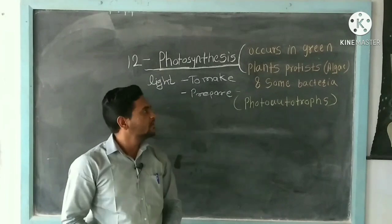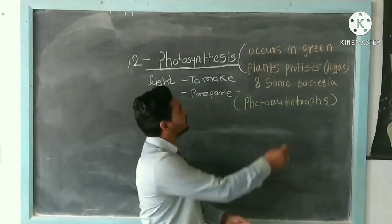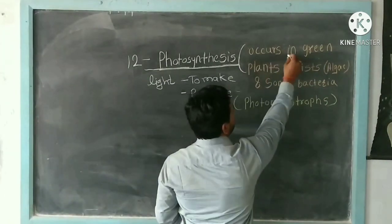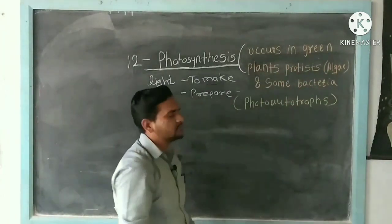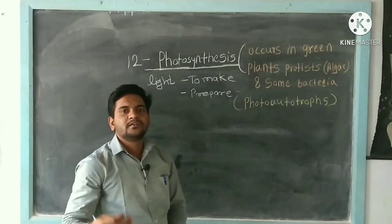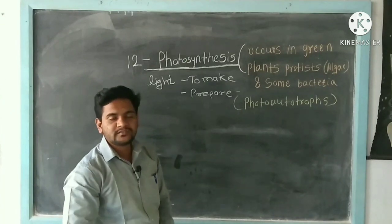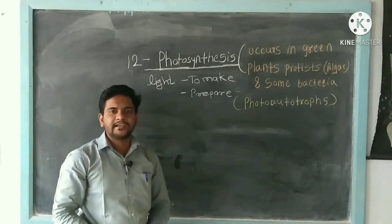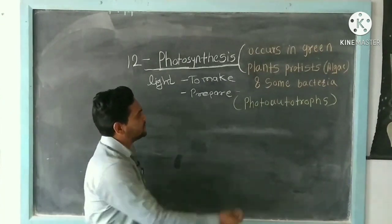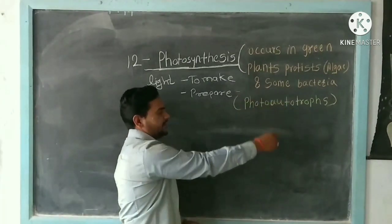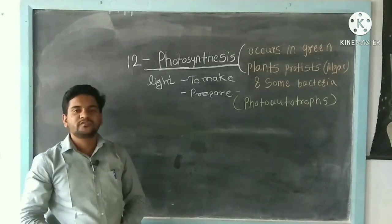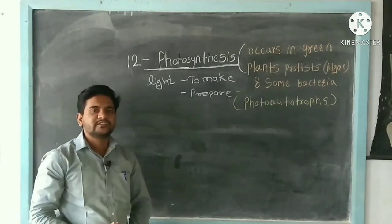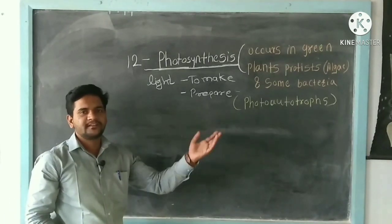Photosynthesis mostly occurs in green plants. Some organisms like algae and some bacteria also carry out this process. This process is mostly produced in green plants.